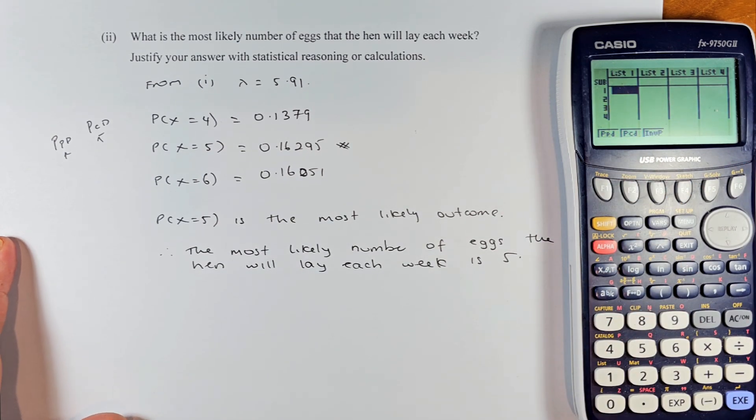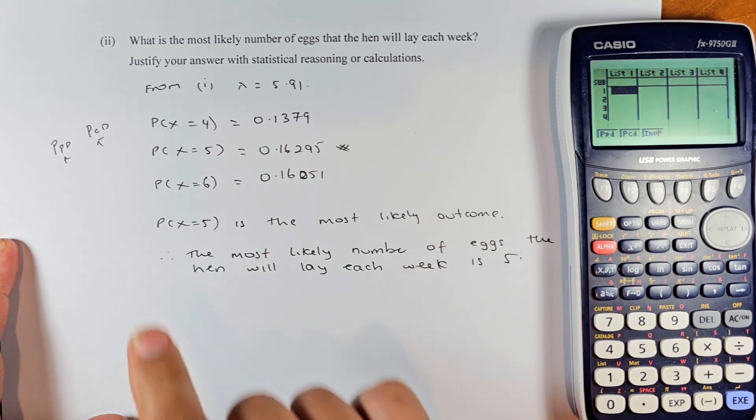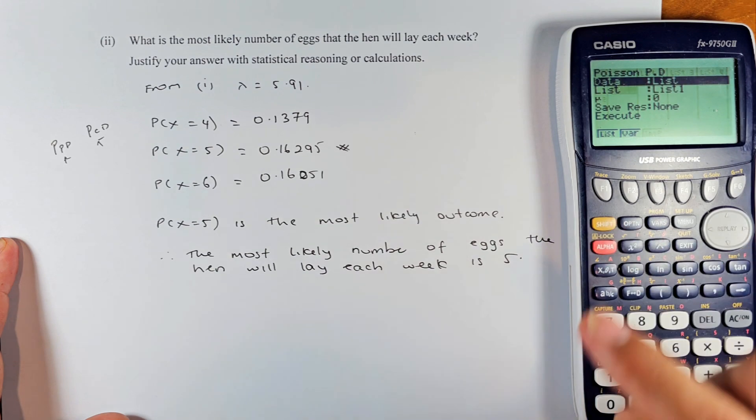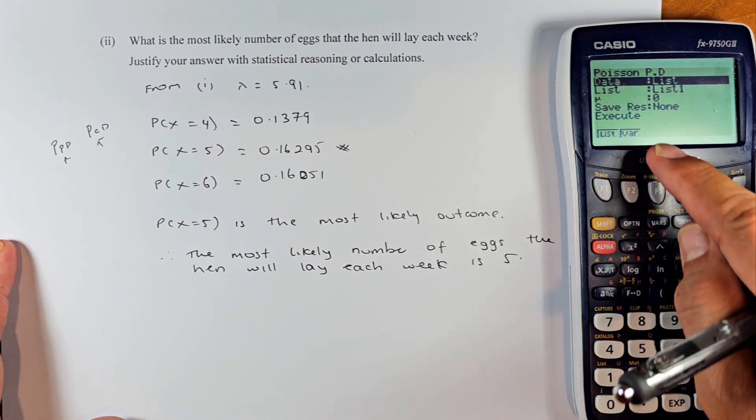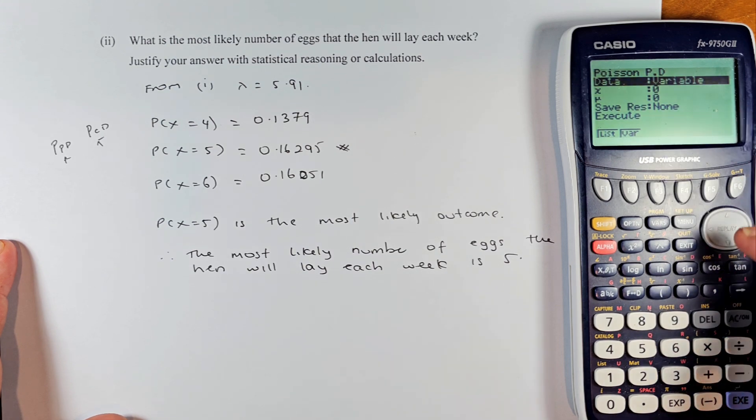As I said before, for this type of question you must do PPD because they're asking for x equals 4, x equals 5, and x equals 6. Remember, you must always go to variable, so press F2. Now we're going to key in the data. Variable is there.